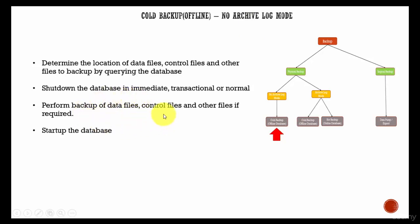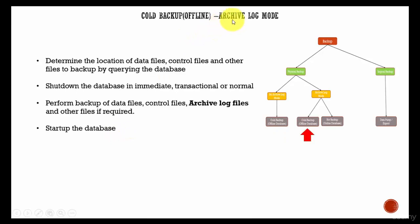Once we perform the backup, you start up the database, and it is open for all user operations. Now let's see what differs in an archive log mode. The steps are the same — the only extra set of files is copying the archive log files. Whenever the database is in archive log mode, periodically the online redo log files are copied as archive redo log files. We need to take the backup of the archive log files also. Apart from that, there is no difference between no archive log mode and archive log mode when taking a cold backup.